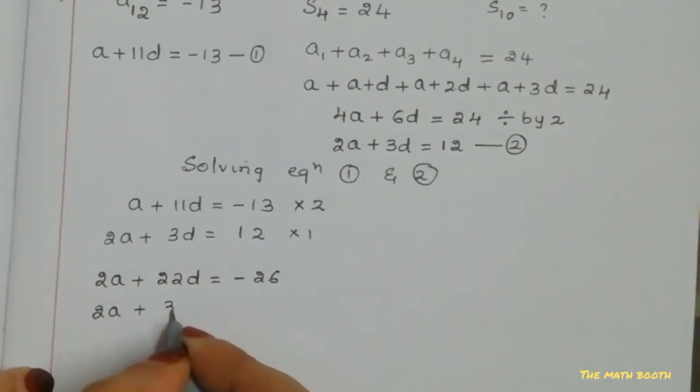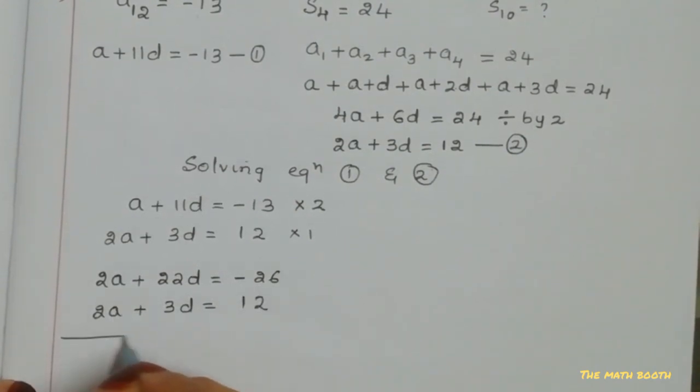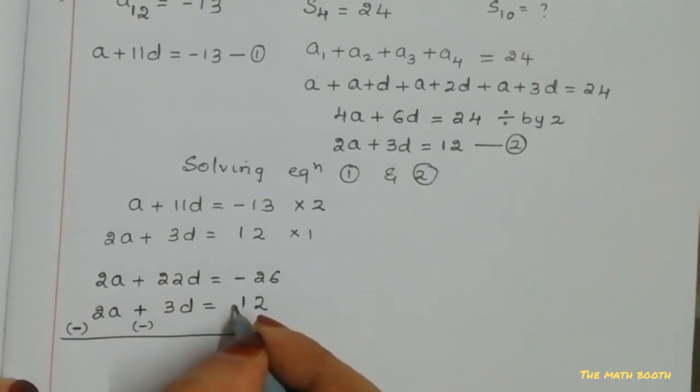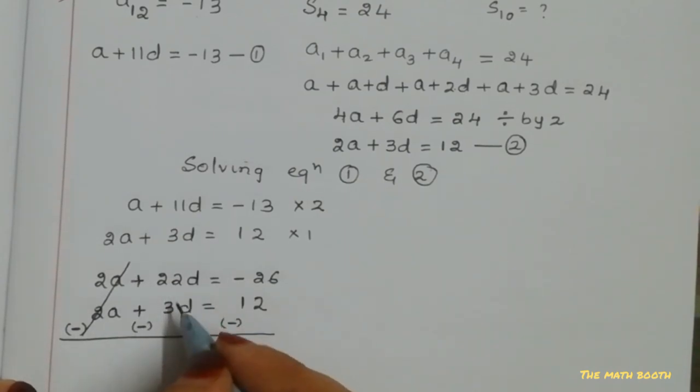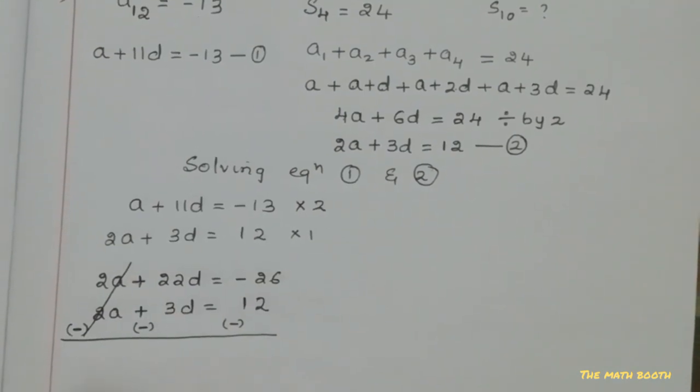Then here multiply by 1 is same equation: 2a + 3d = 12. Let us change the sign because we have to eliminate this, cancel this. Both are positive, so we cannot cancel, so let us change the sign. Minus this: plus becomes minus and here plus becomes minus. So 2a minus 2a get cancelled. Plus and minus, it is minus, so 22 - 3.